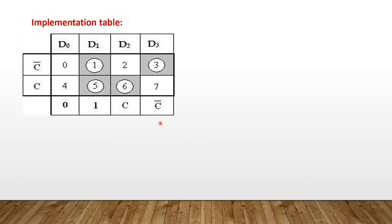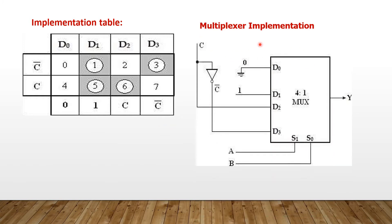Now we can draw the circuit. This is the multiplexer implementation: a 4 to 1 multiplexer with 4 inputs d0, d1, d2, d3 and 2 selection lines S1, S0. The remaining two variables A and B are connected to the selection lines. From the implementation table: d0 = 0, so d0 is grounded. d1 = 1, so d1 is connected to logic 1. d2 = C, so d2 is connected to C. d3 = C bar, so d3 is connected to the complement of C.